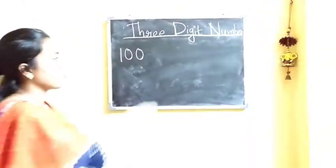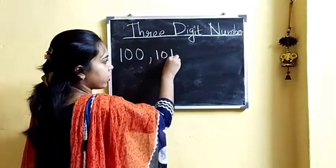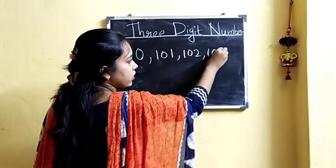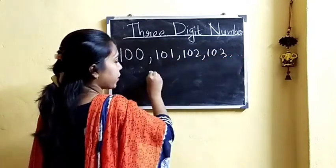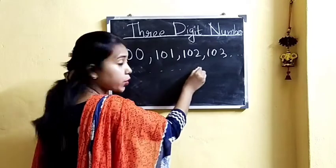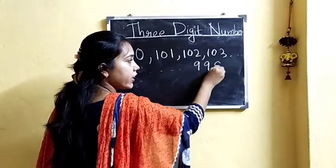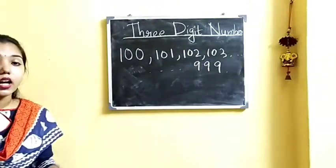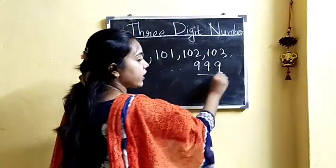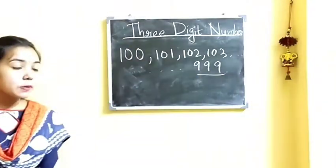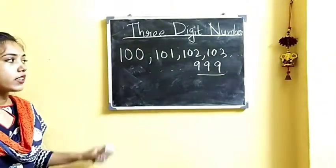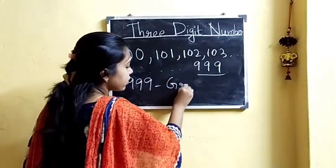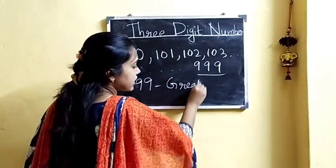The 3-digit numbers start from 100 as it is the smallest 3-digit number. They are followed by 101, 102, 103, and so on, proceeding up to 999 as there is no 3-digit number after 999. So children, we learn that 999 is the greatest 3-digit number.